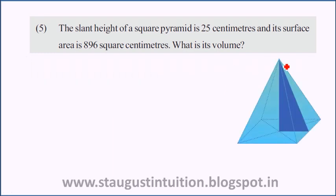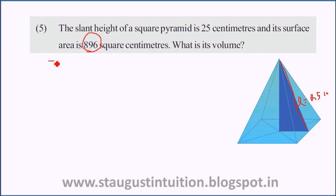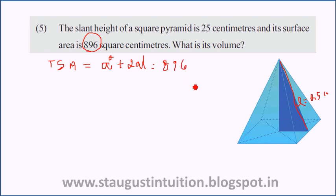The slant height of a square pyramid is L. That slant height L is equal to 25 centimeters. And its total surface area is 896 square centimeters. The total surface area formula is a squared plus 2aL, and it is equal to 896.